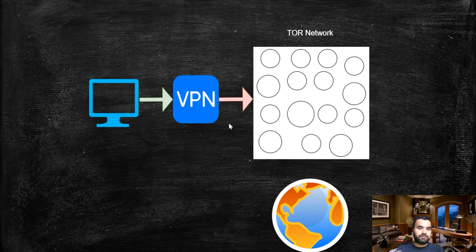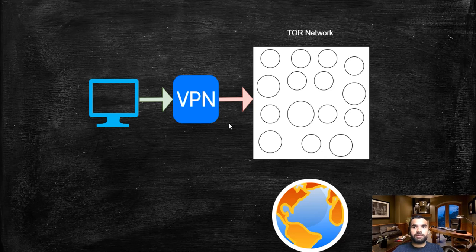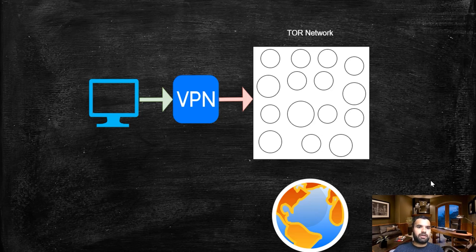The third and most critical benefit for our purposes is bypassing censorship. Your ISP will not be able to detect whether you're hitting the Tor network or just connecting to a VPN server, so it cannot censor your connection. That way you can easily bypass restrictions and browse the dark web — I think this is the easiest way to do so.